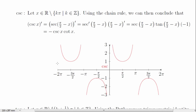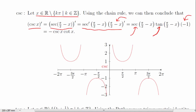Since cosecant is the co-function of secant, we can use the co-function property again. With x in the domain of cosecant, we rewrite cosecant in terms of secant with argument pi over 2 minus x. Taking the derivative via the chain rule, we again get a factor of negative 1. Since the derivative of secant of x is secant of x times tangent of x, and since secant and cosecant are co-functions and tangent and cotangent are co-functions, the derivative of cosecant of x is negative cosecant of x times cotangent of x — with the expected minus sign.